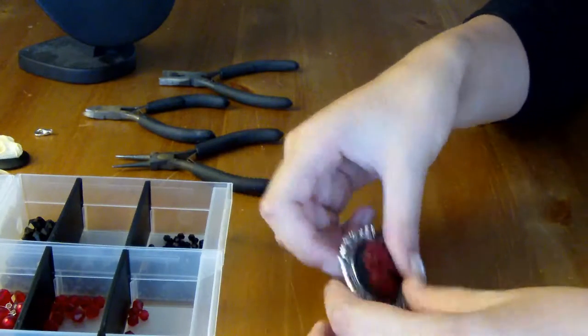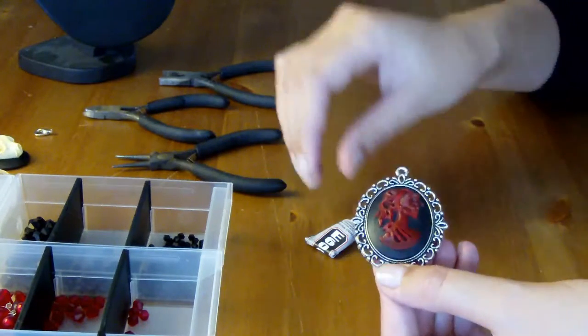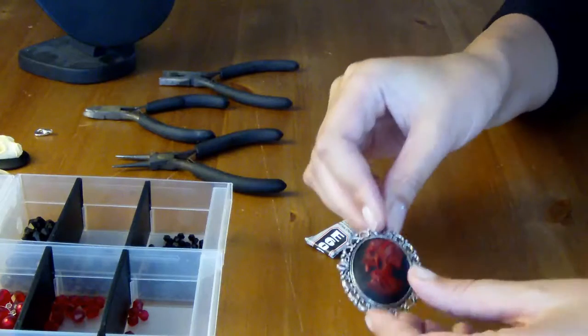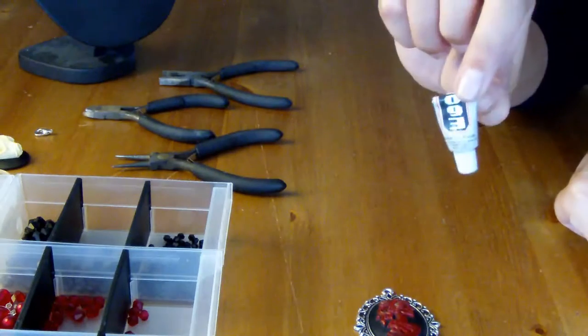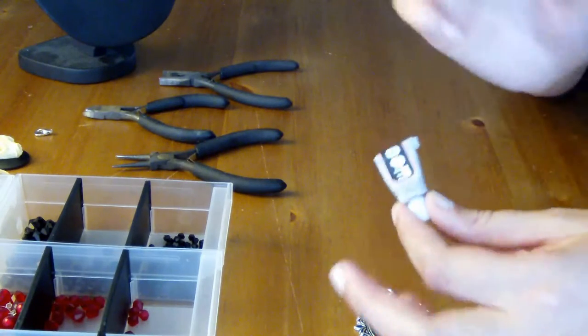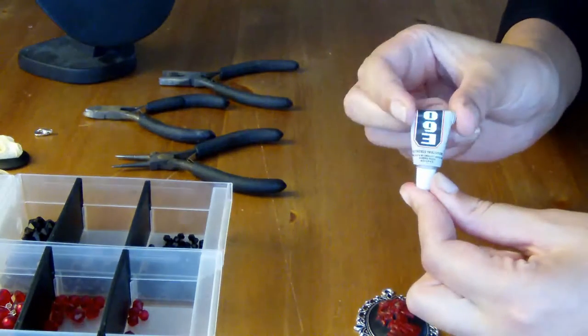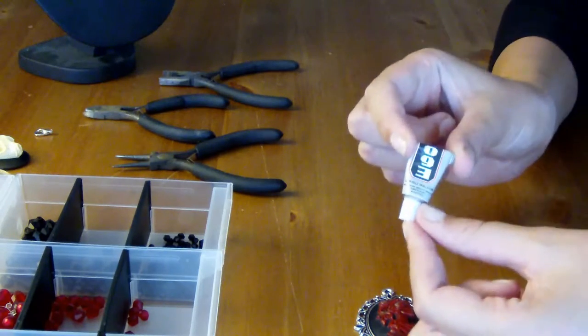So as you can see, you can just pop in the setting to see how it looks. And to glue this to the setting, you will be needing some glue. And I'm using E6000. And you can get these into tiny tubes like this one, or you can get bigger tubes. And I use this basically for all my craft projects.